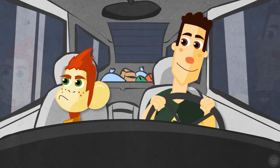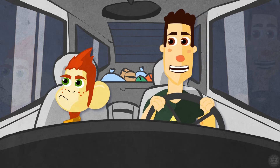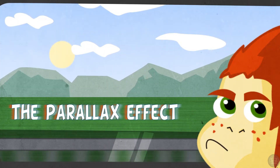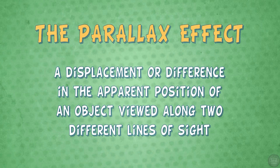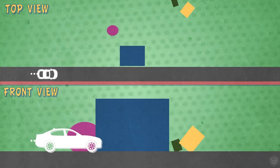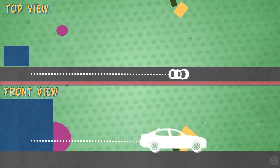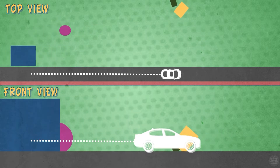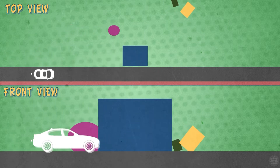You know why the road and the fence are moving faster than the cow and those trees back there? It's because of the parallax effect — a displacement or difference in the apparent position of an object viewed along two different lines of sight. That is a mouthful. In English, this means that as you're moving, whatever is closer to you seems to move faster than whatever is further away.